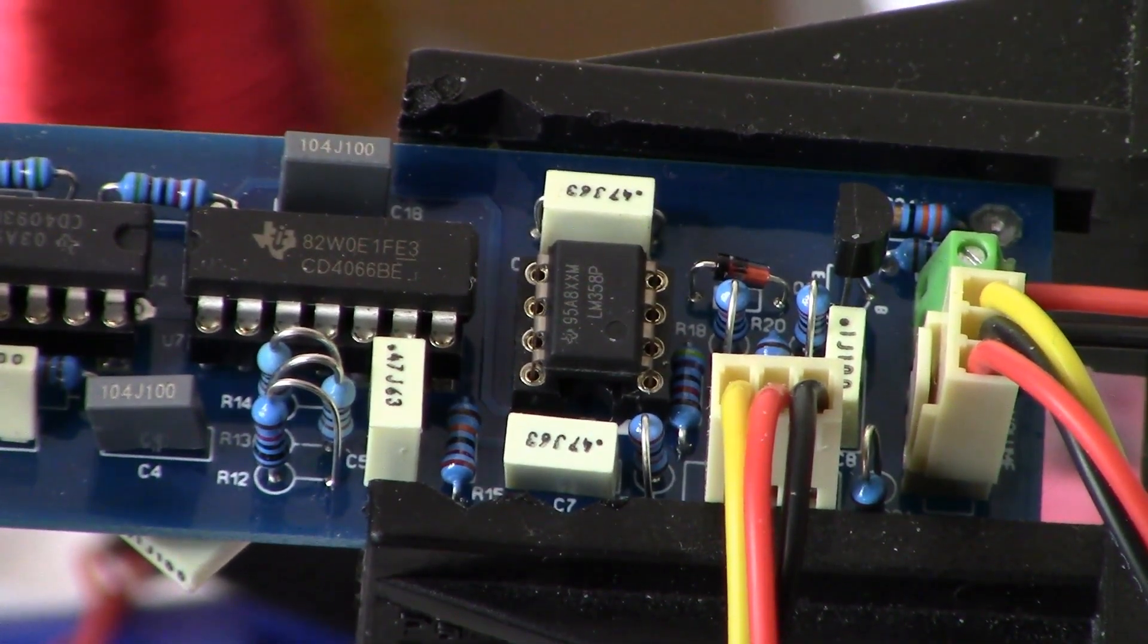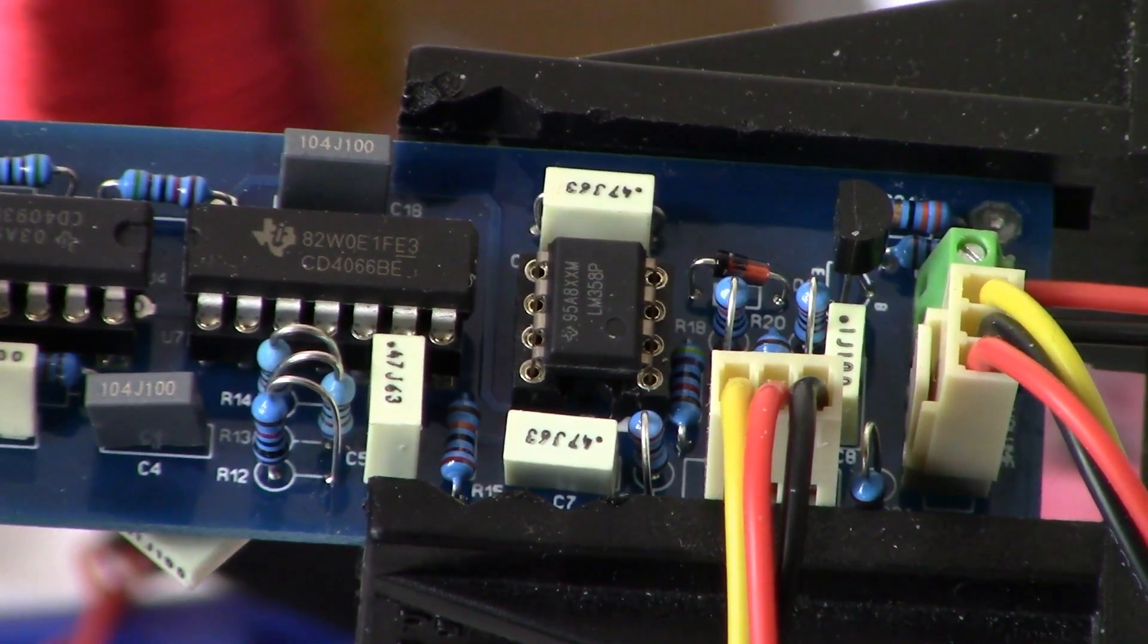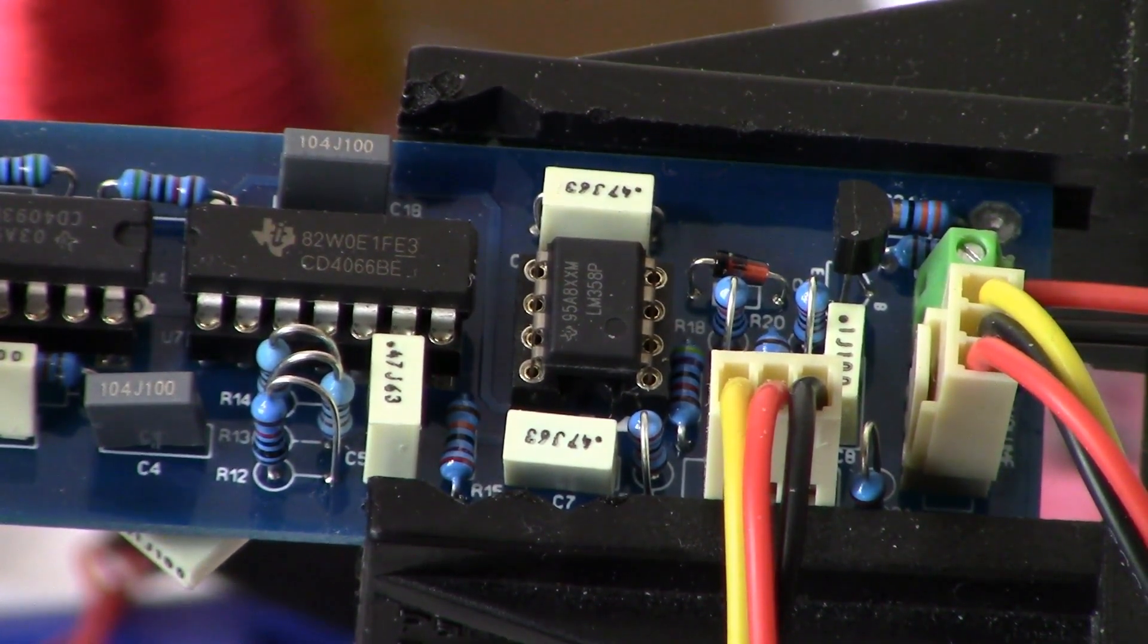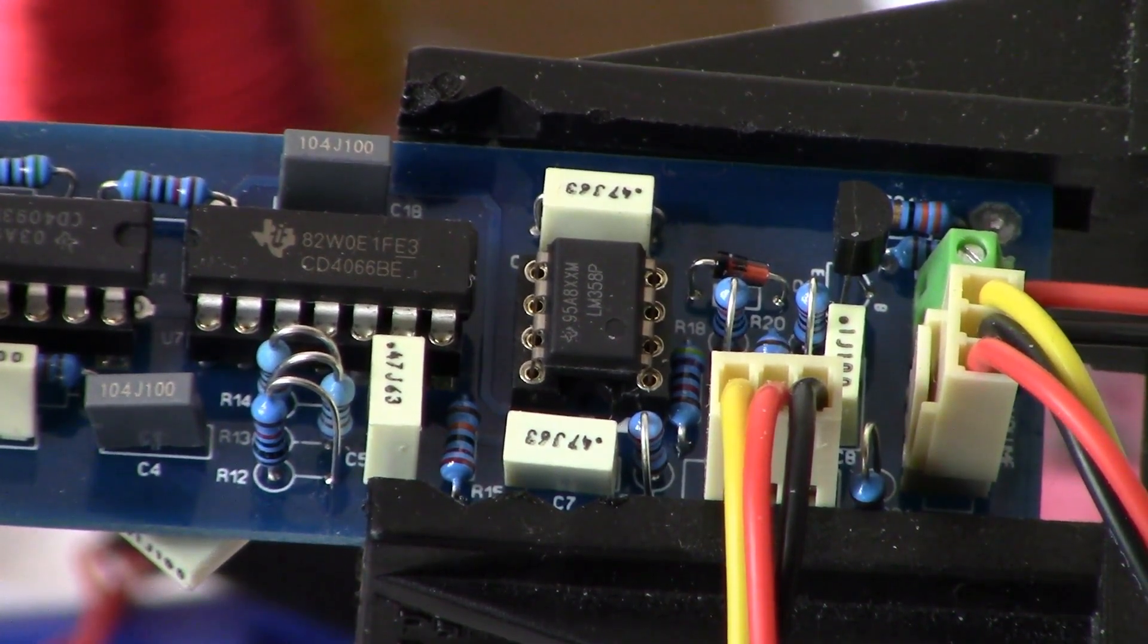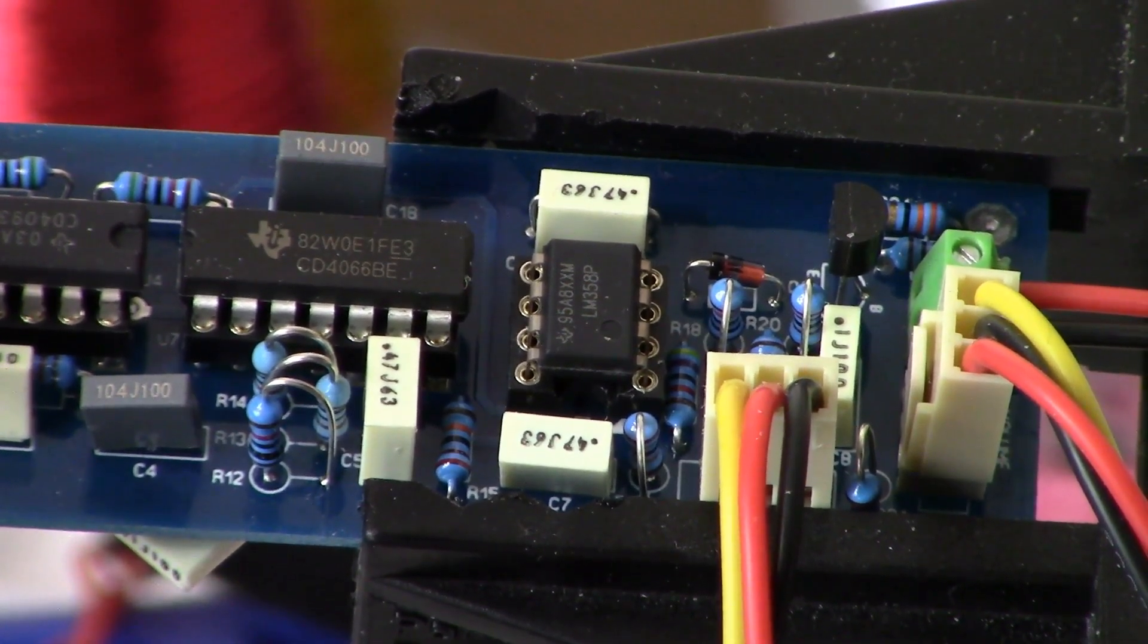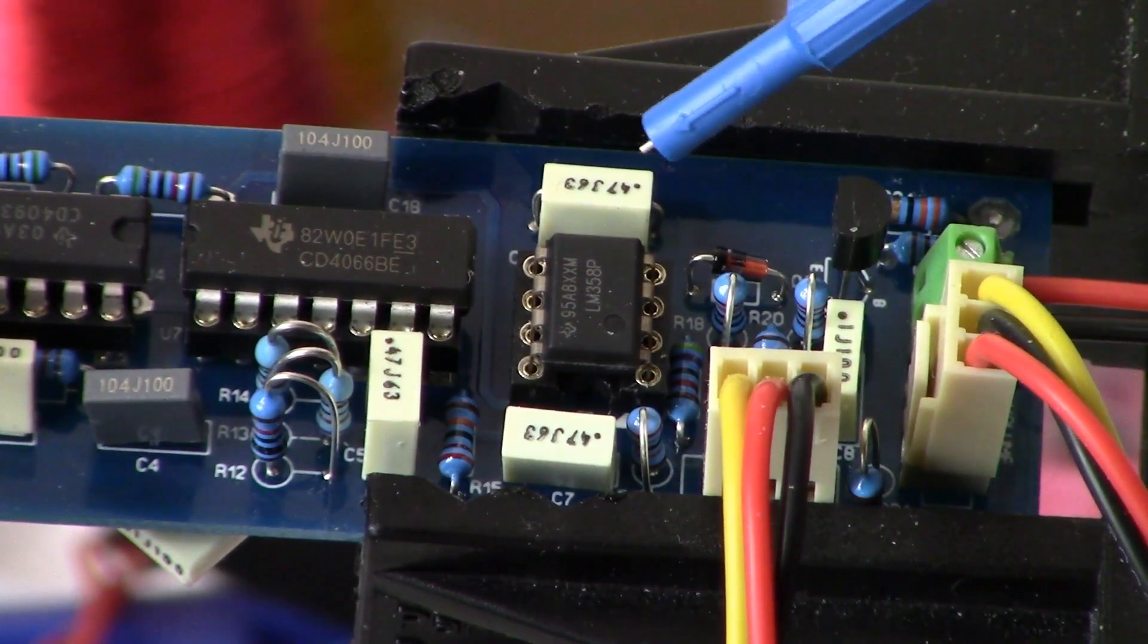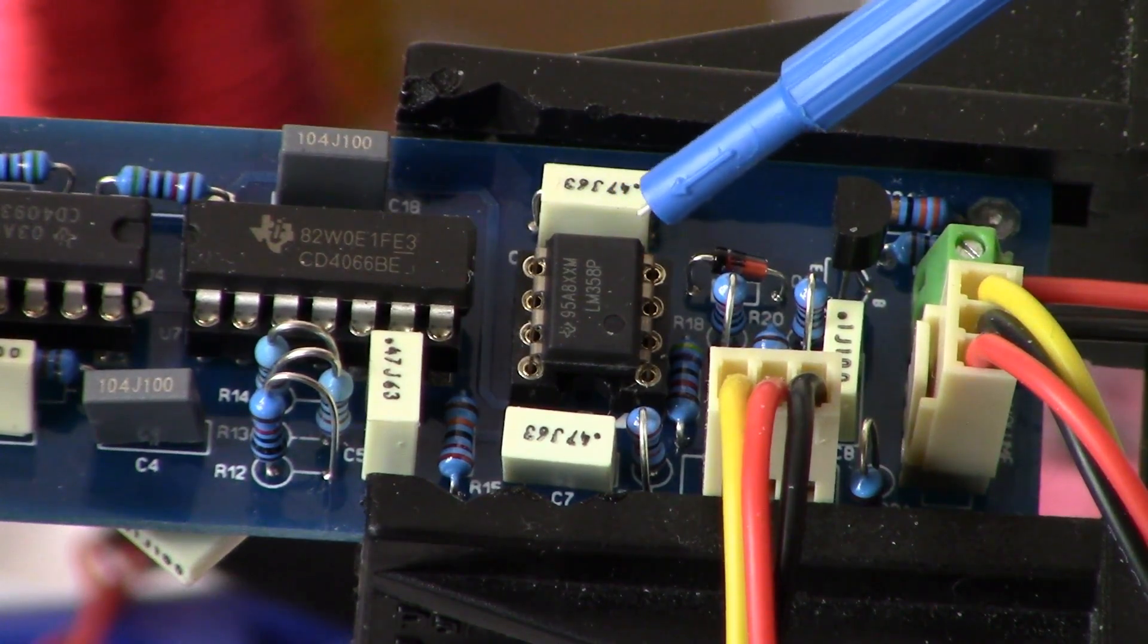All right ladies and gents, welcome back to what will be the final installment of my build of the Surf PI longboard. What we have here on the screen is the sampling integrator, anchored with an LM 358.